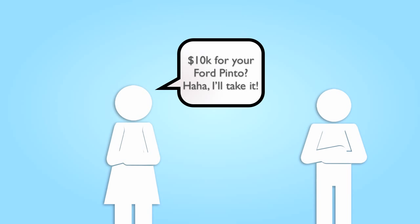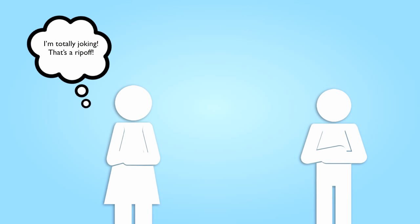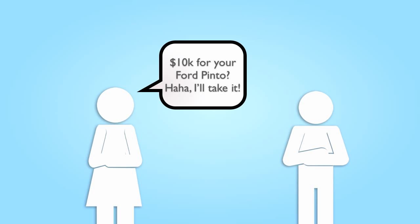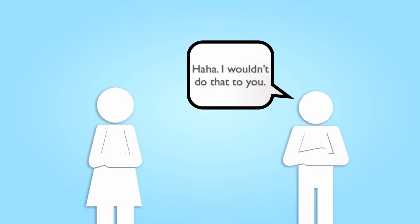If Sam offers to sell his car to Mary for $10,000 and Mary says she accepts — on the other hand, if Sam knows Mary well enough and detects from her voice that she's joking, we will see later in the course that their mutually hidden understanding actually trumps the way a reasonable person would interpret their words. When Sam is aware that Mary is kidding, no contract is formed.